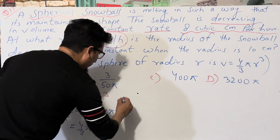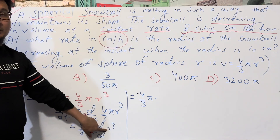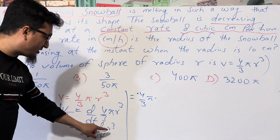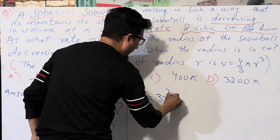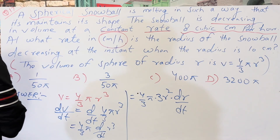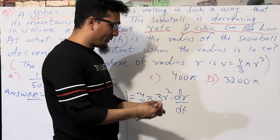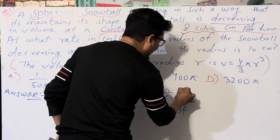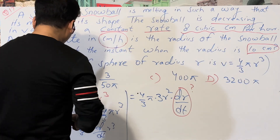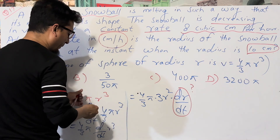Applying the chain rule to r³ gives 3r², so we multiply: dV/dt = (4/3)π · 3r² · (dr/dt). The question asks for dr/dt in centimeters per hour when r = 10 cm.